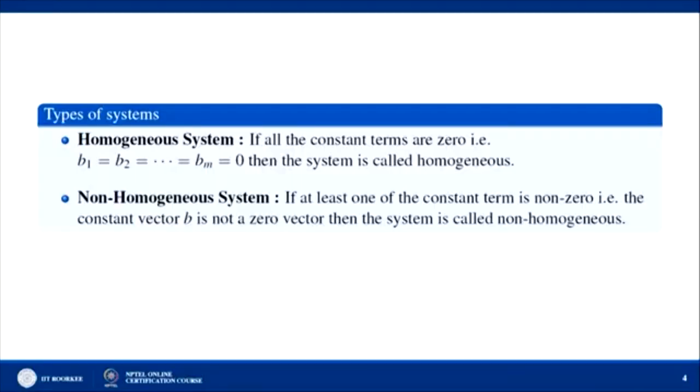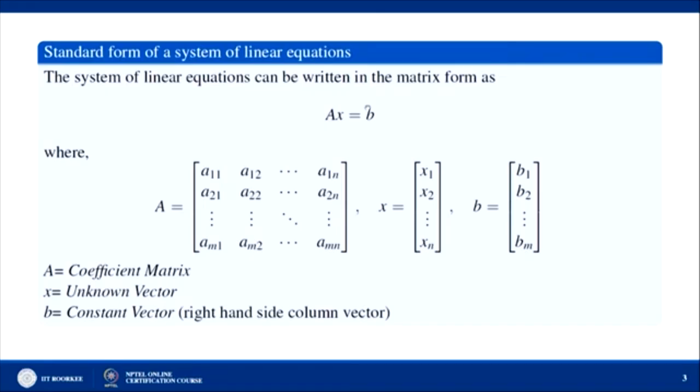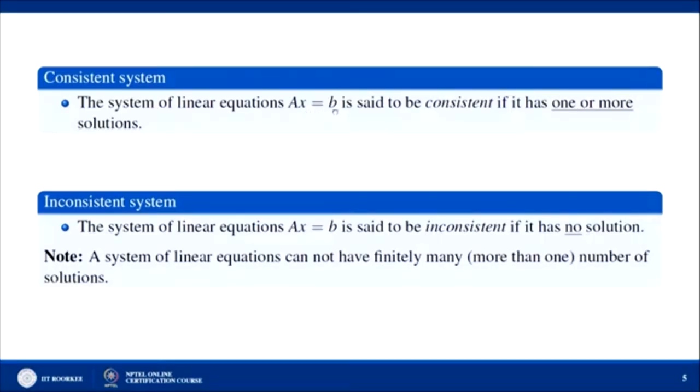Systems of linear equations are of two types: homogeneous or non-homogeneous. If the right hand side b has all entries equal to zero — b_1 = 0, b_2 = 0, up to b_m = 0 — the system is called a homogeneous system of equations. The system Ax = b is called consistent if it has one or more solutions, and inconsistent if it has no solution.